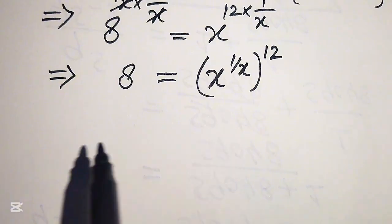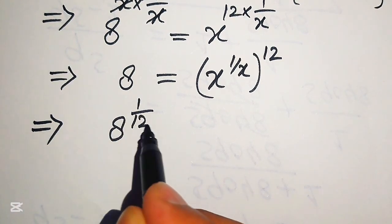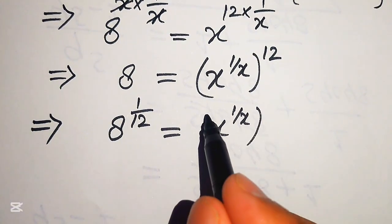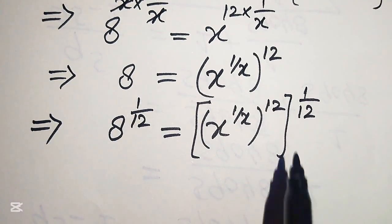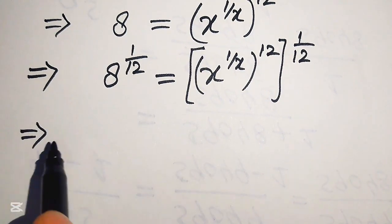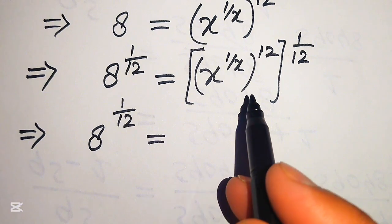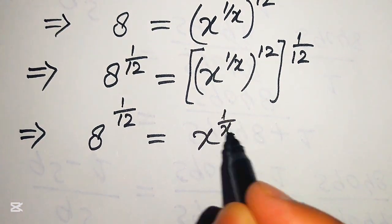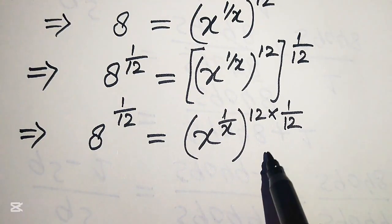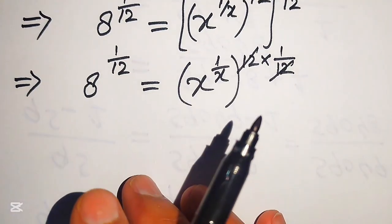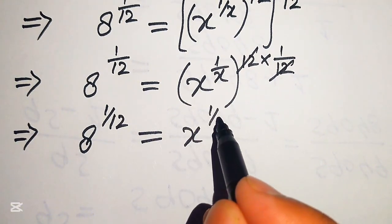Now we move the constant term 12 to the left-hand side. For this we eliminate this 12 from the right-hand side by taking the 12th root on both sides — in other words, we take 1 over 12 power on both sides. After taking this power, we write the equation as x to the power of 1 over x, whole power 12, with exponent 1 over 12. Applying the exponent law, we multiply 12 by 1 over 12; the 12s cancel, and we get 8 to the power of 1 over 12 equals x to the power of 1 over x.